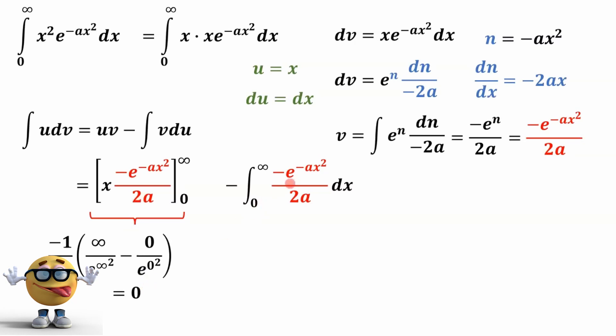Now what about this? Well, if we cleaned it up, we have negative and a negative, so that becomes positive. We'll yank out the 2a in the denominator, 1 over 2a. And now we have this integral. This is still a Gaussian function. It's a little simpler than what we started with.